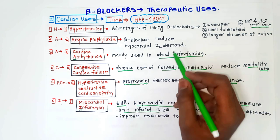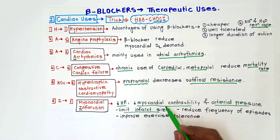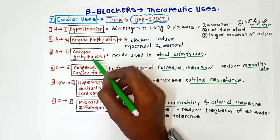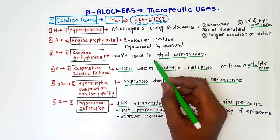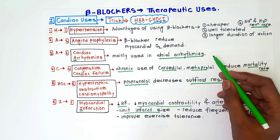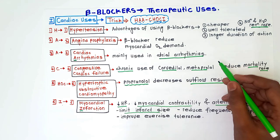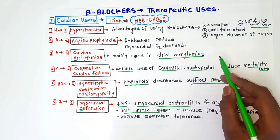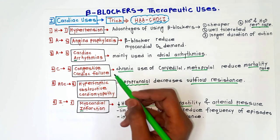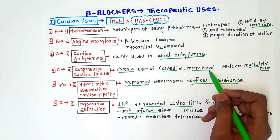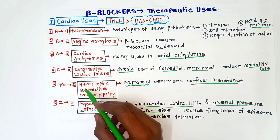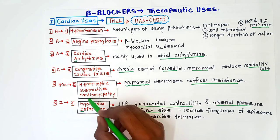For cardiac arrhythmias, beta blockers are mainly used in atrial arrhythmias like atrial fibrillation and atrial flutter; they are rarely used in ventricular arrhythmias. For congestive cardiac failure, chronic use of carvedilol and metoprolol reduces the mortality rate.